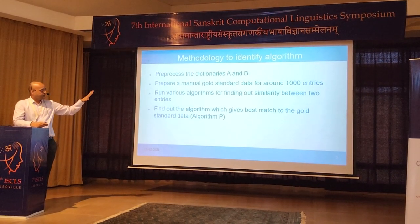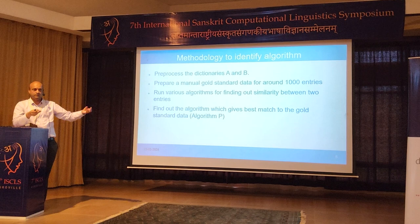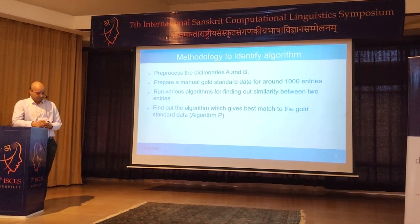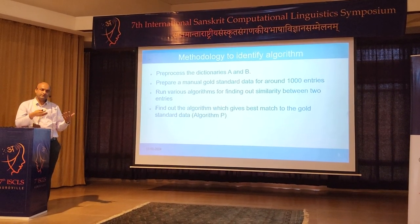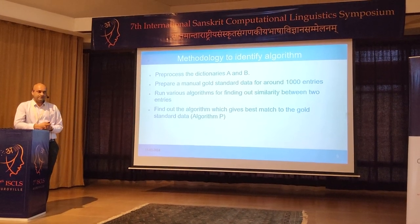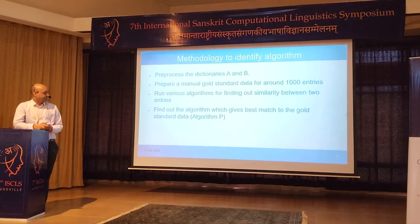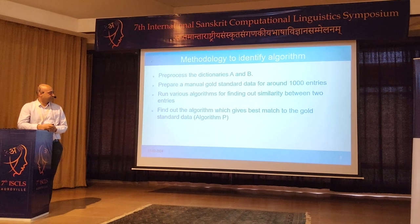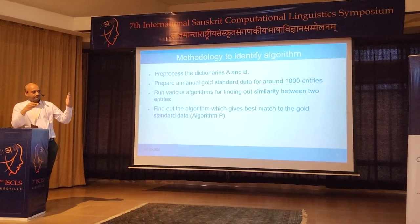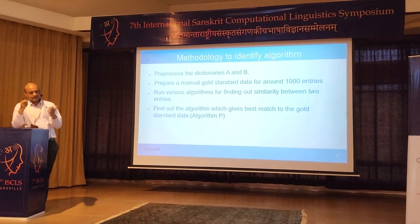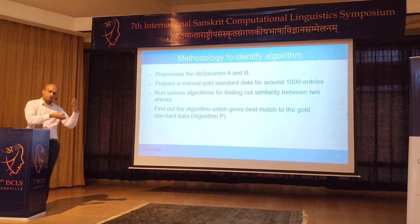What was done was we pre-processed the dictionaries — removal of obvious errors, extra punctuation, or markup errors. Then a small thousand-entry dataset was prepared: dictionary one and dictionary two were manually mapped, so you can check the performance of the algorithms against that gold standard. Various textual similarity-based algorithms were run to find similarity scores between two entries, and whichever algorithm gave the best result was extrapolated to the full dataset.